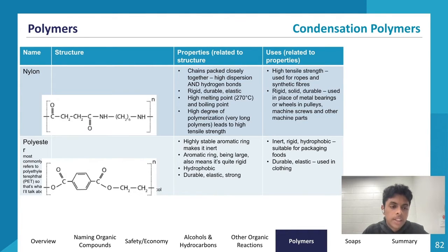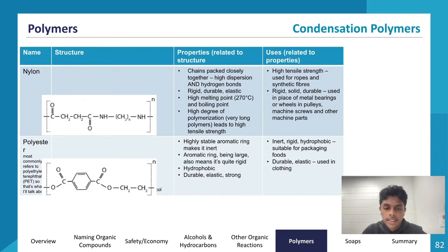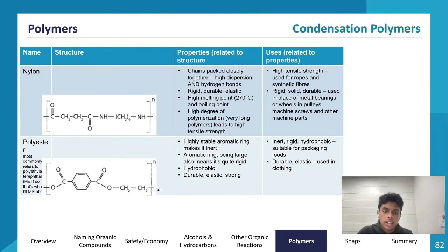Polyester most commonly refers to polyethylene terephthalate, or PET. It has a highly stable aromatic ring making it inert and very unreactive. The large aromatic ring also makes it quite rigid. It's hydrophobic, meaning it's insoluble in water, but it's very durable, elastic, and strong. Because it's inert, rigid, and hydrophobic, it's quite suitable for packaging foods. Its durable and elastic nature also means it can be used in clothing.